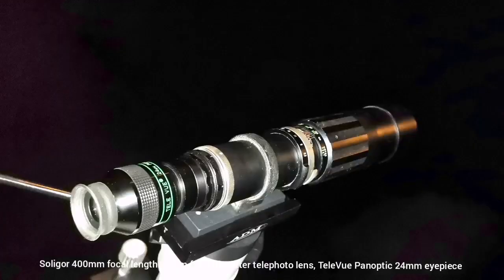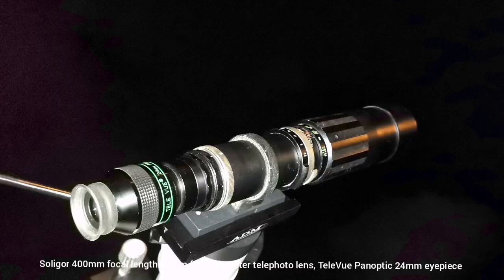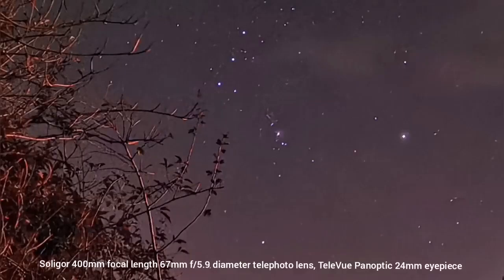The first telescope I'm using is the Sellnor old lens, a solid old lens with 400mm focal length and 67mm aperture. And I'm using a TeleVue Panoptic 24mm eyepiece.